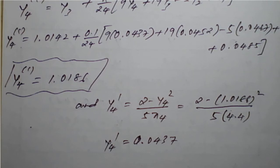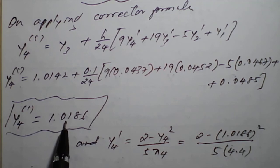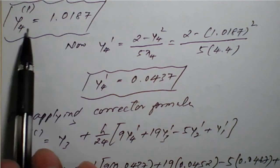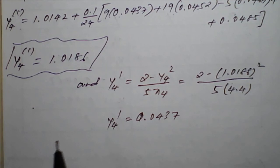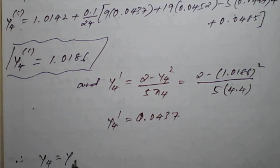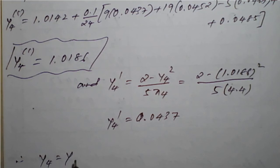Comparing the corrector value and predictor value: the corrector value is 1.0186 and the predictor value is 1.0187. The difference is only 1 in the last digit, so we do not iterate further. Therefore, y₄, which is y(4.4), equals 1.0186, which is the required solution of the given differential equation using the Adams-Bashforth method.